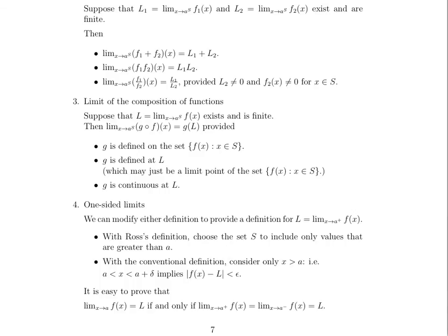Right? That is sort of like the idea that when F acts on X, it spits out something that G can actually act on. The other thing that we need is that G is defined at L. It may just be a limit point of the set. That's okay. But G does need to be defined at L. And G is continuous at L.